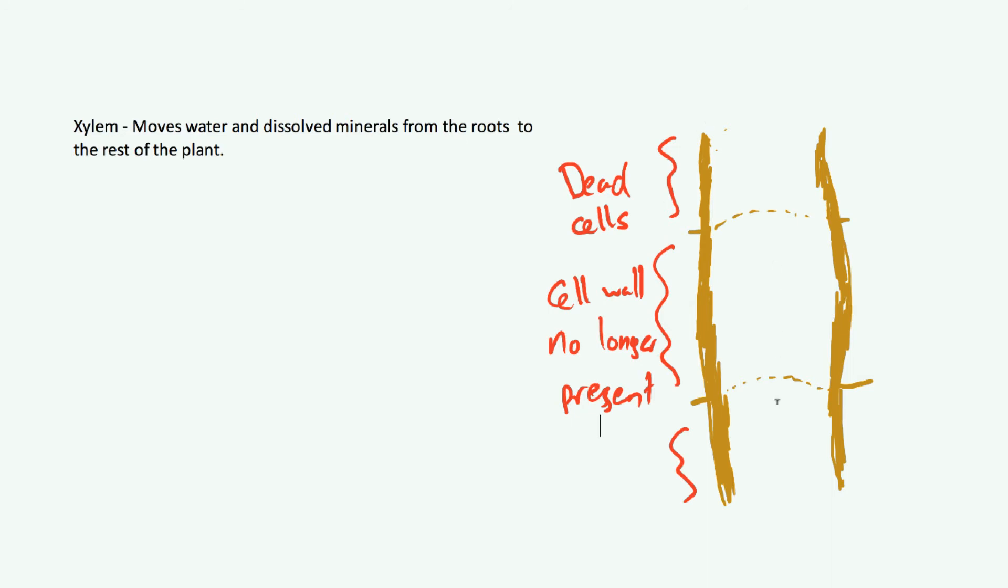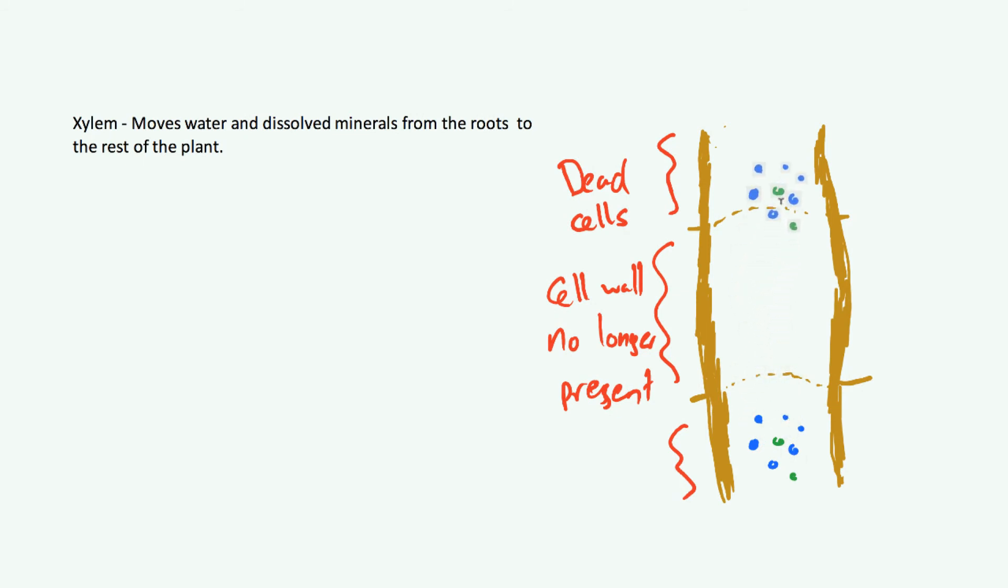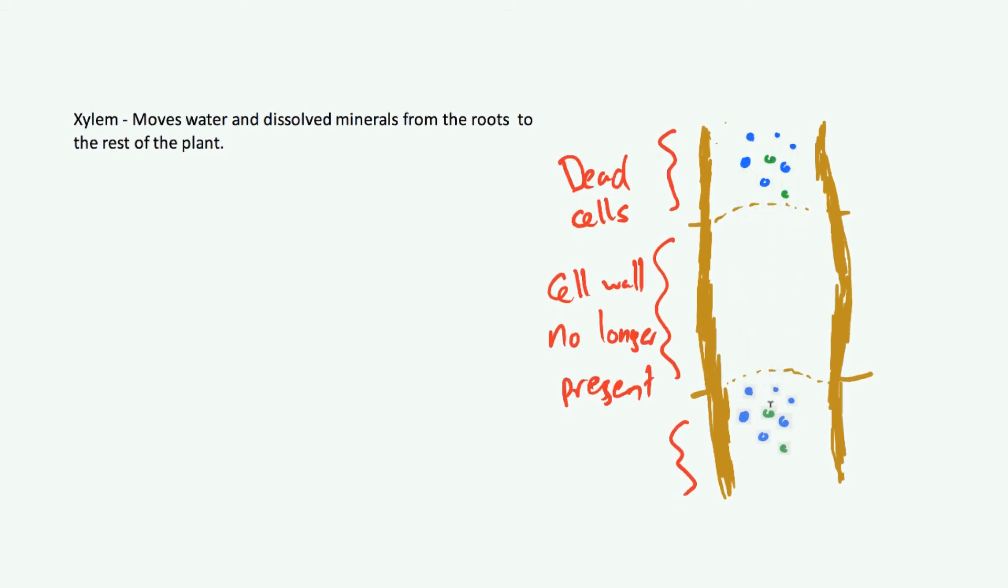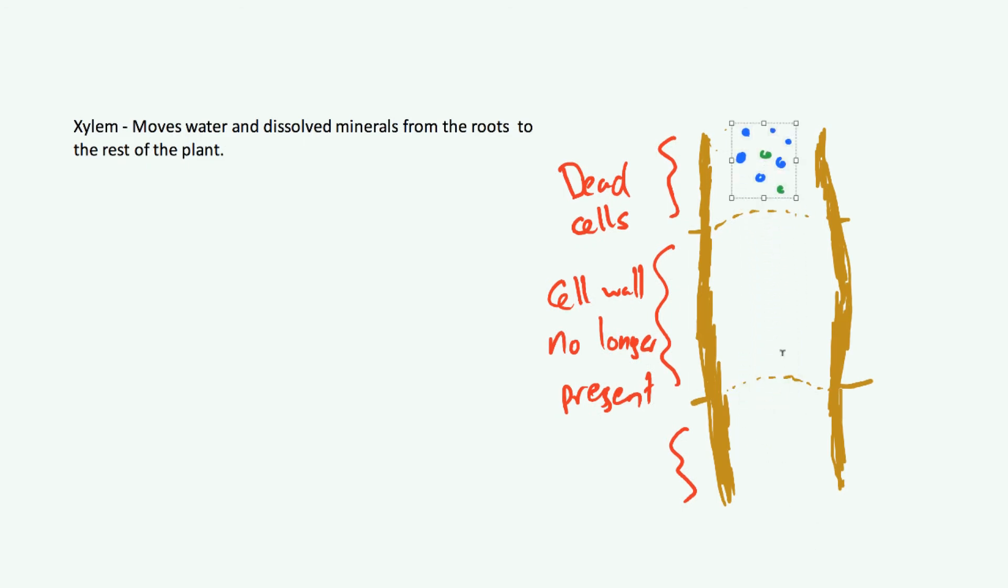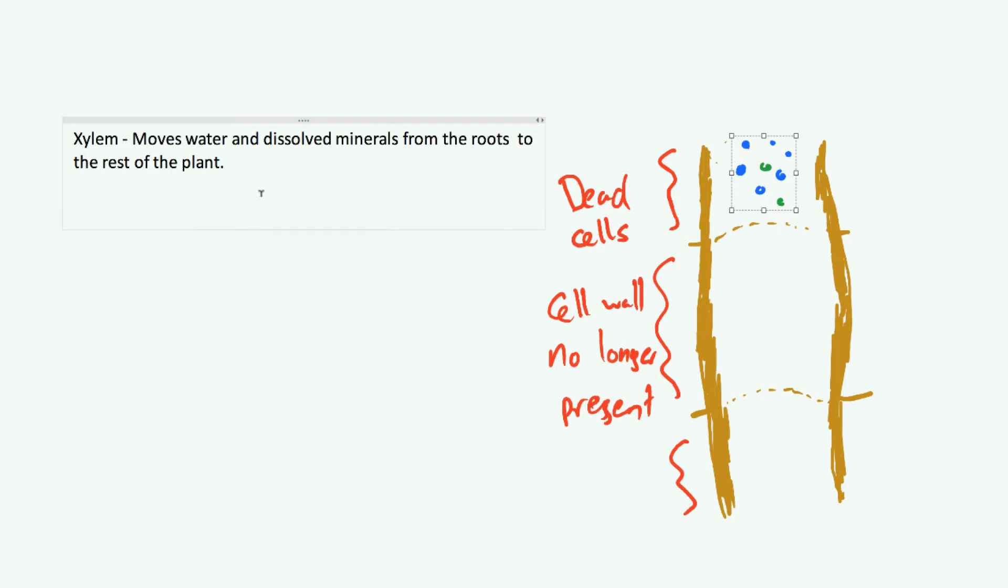There's basically just an empty tube in the middle where the water and minerals are going to move. Those things can only go in one direction, from the roots to the rest of the plant. These are going to go up, they are not going to go back down. More water and minerals will follow them.